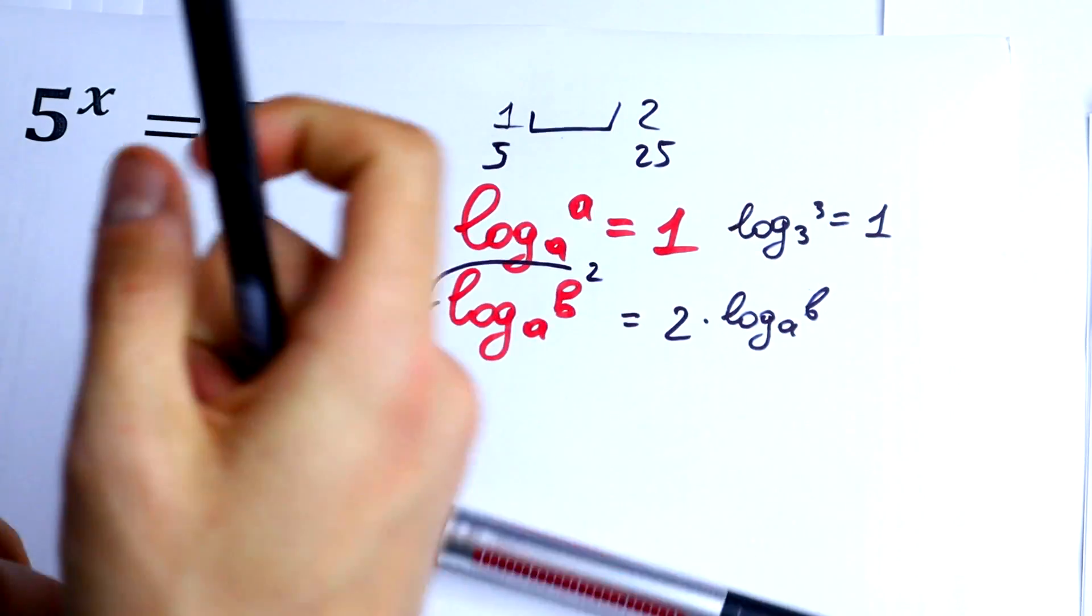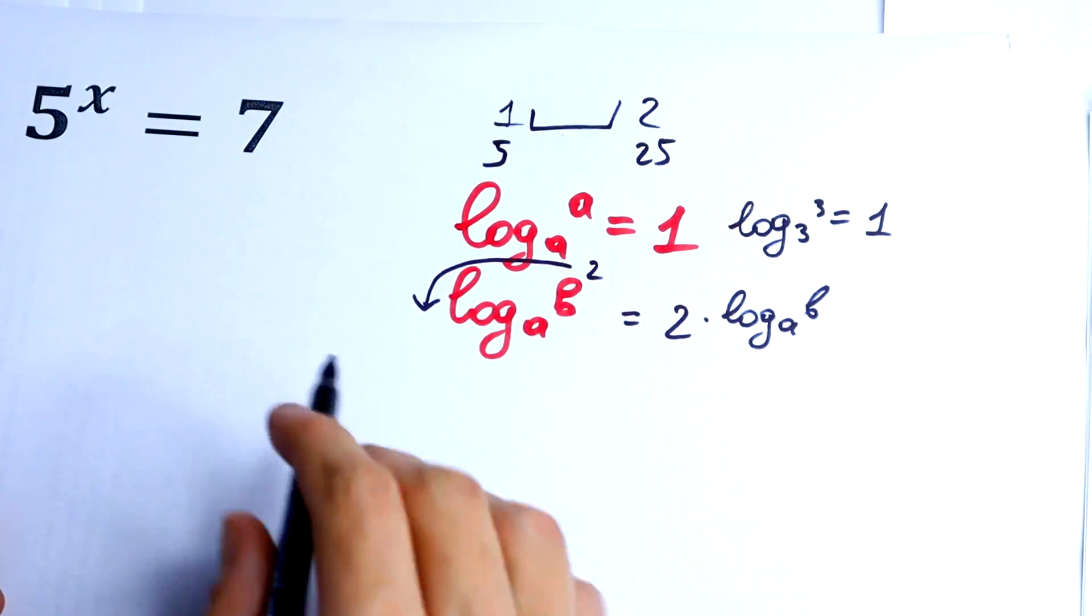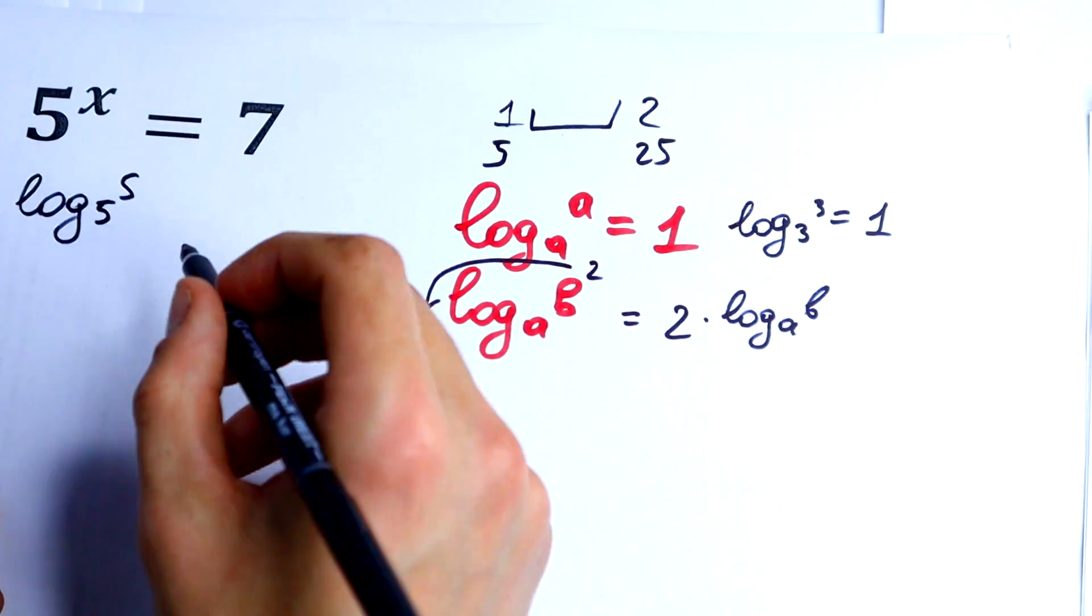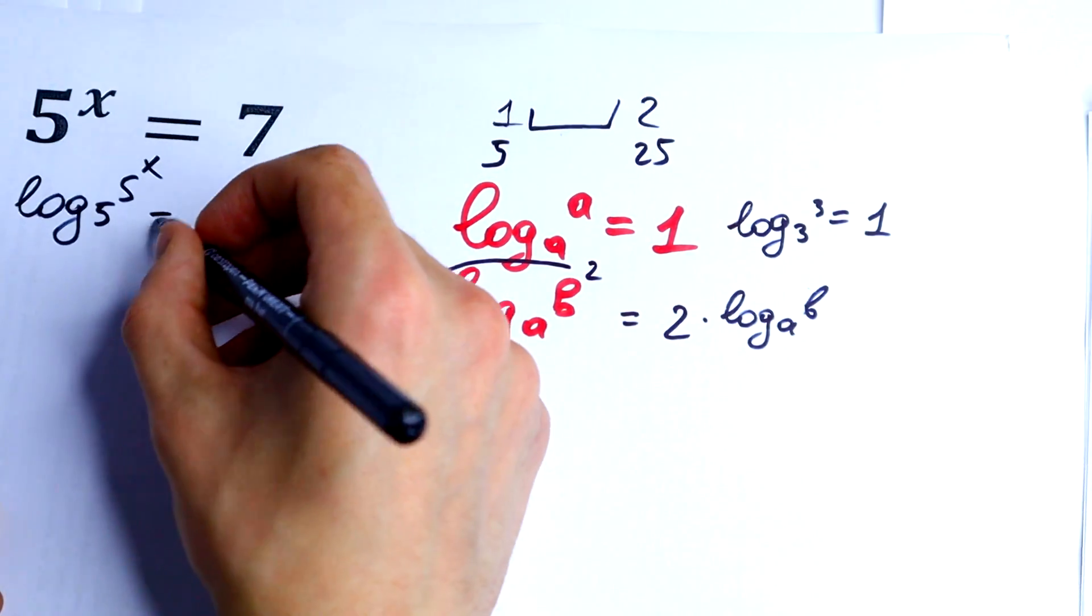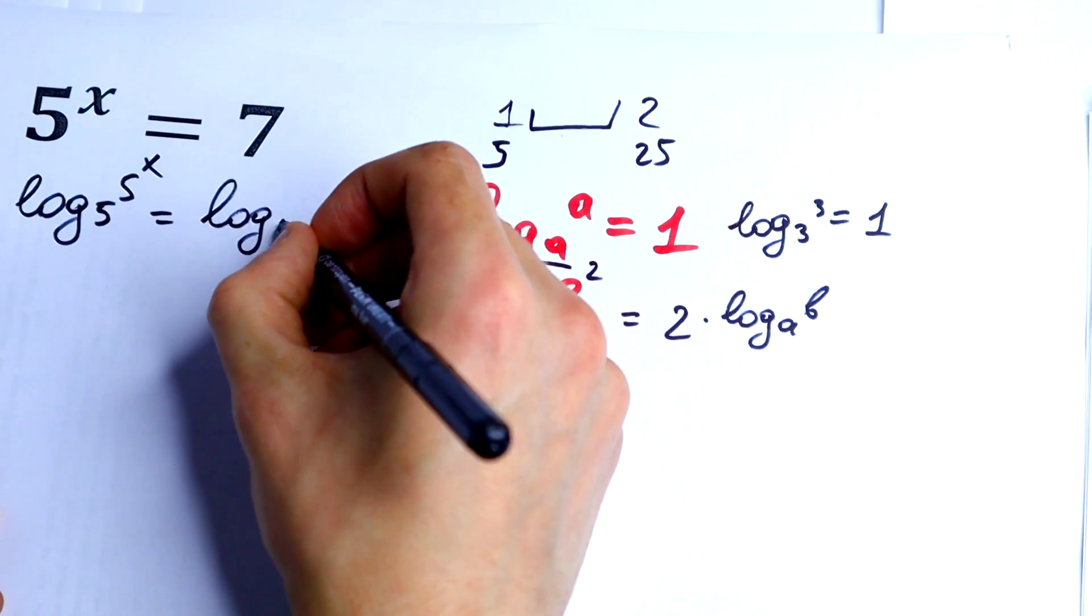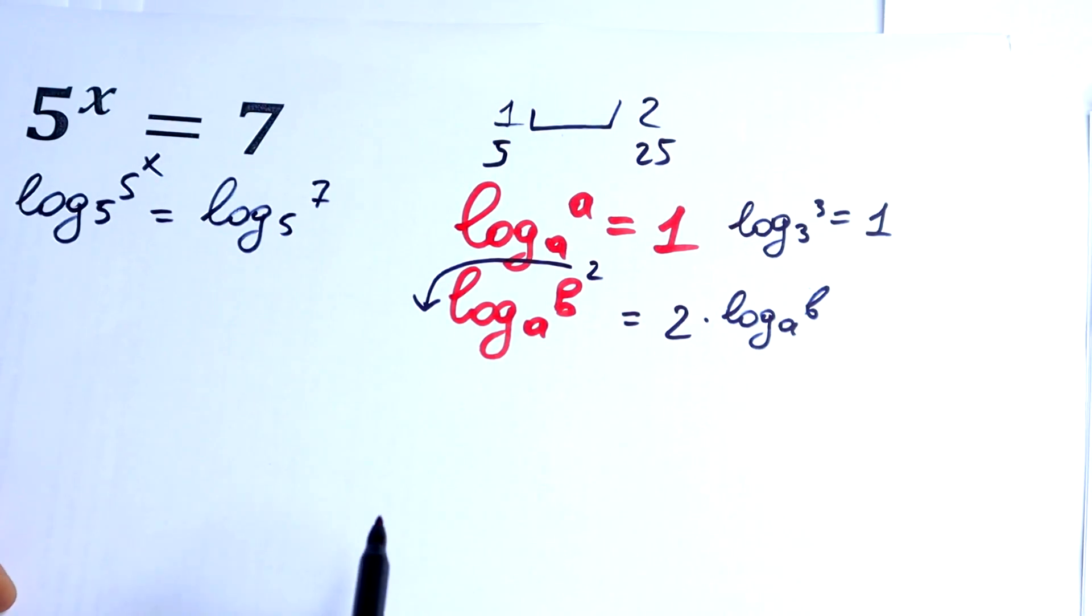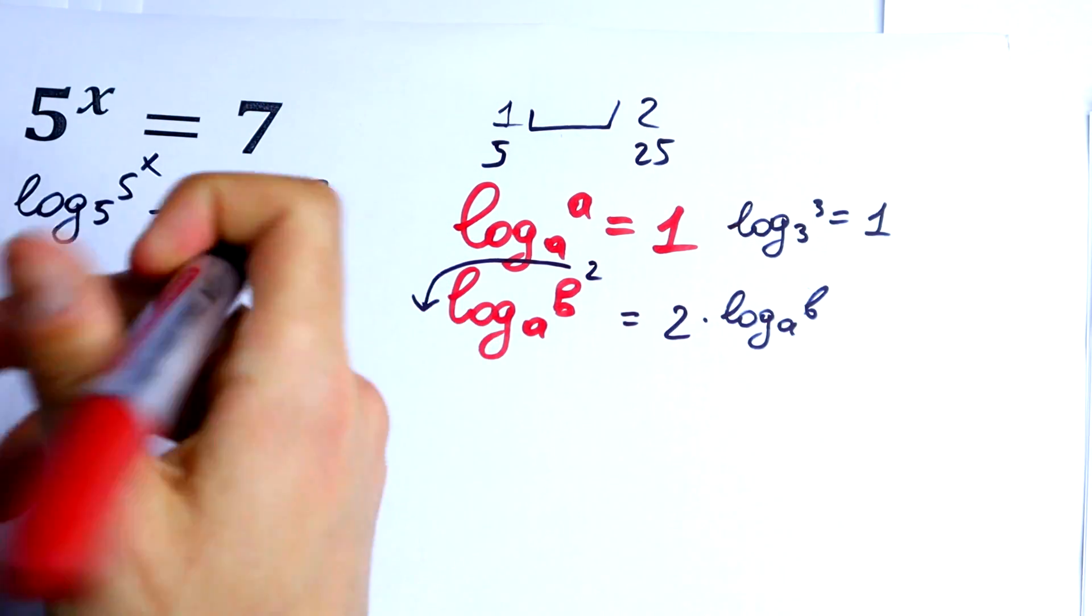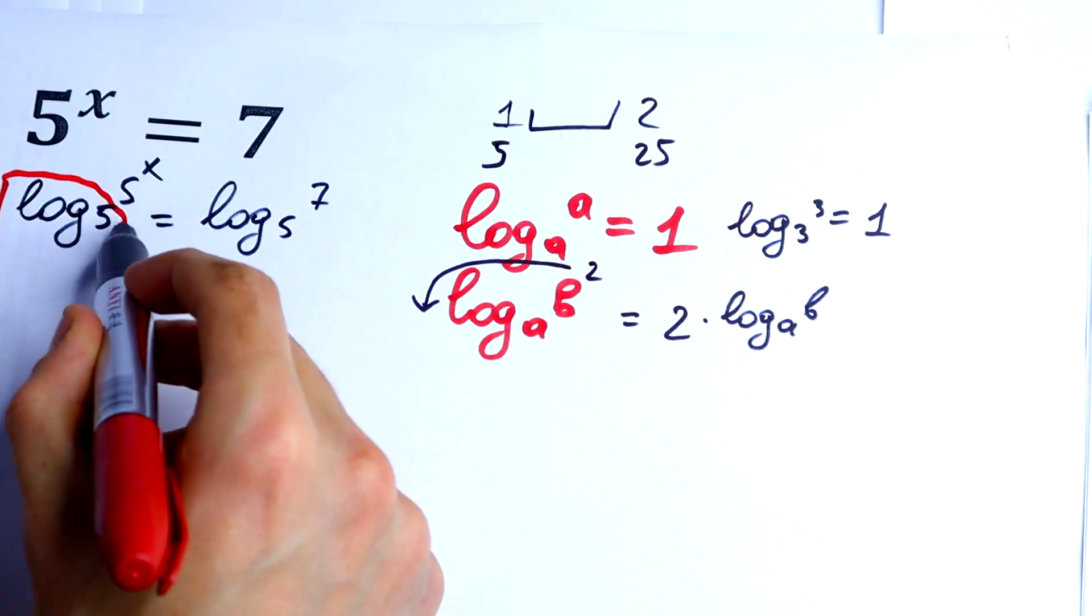We will have log base 5 of 5 to the power x equals log base 5 of 7. Now just write this log from both sides.